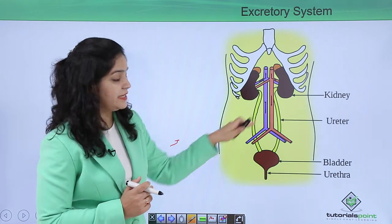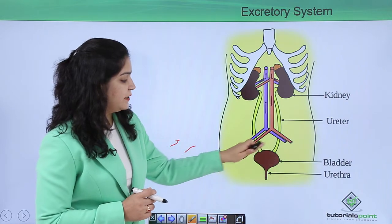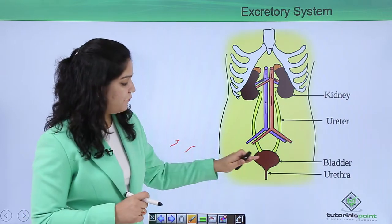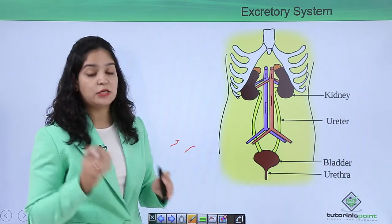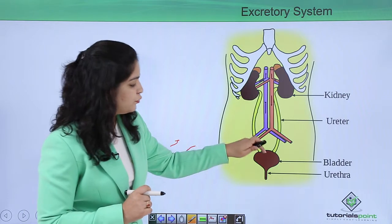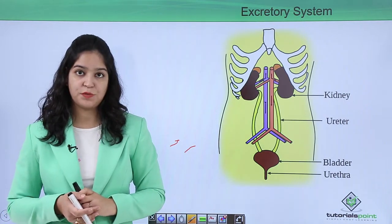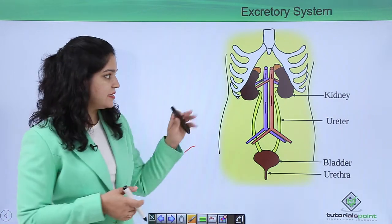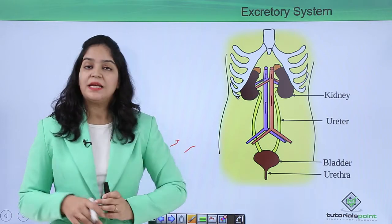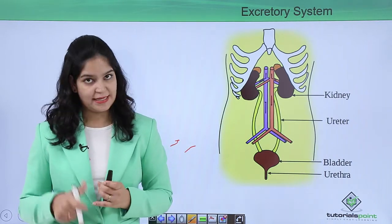For some time the bladder keeps the urine, and after a few minutes, or when the bladder is filled, the urine comes out through the urethra. So this is our excretory system.